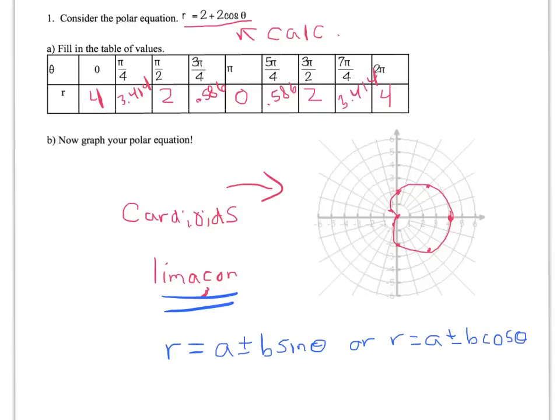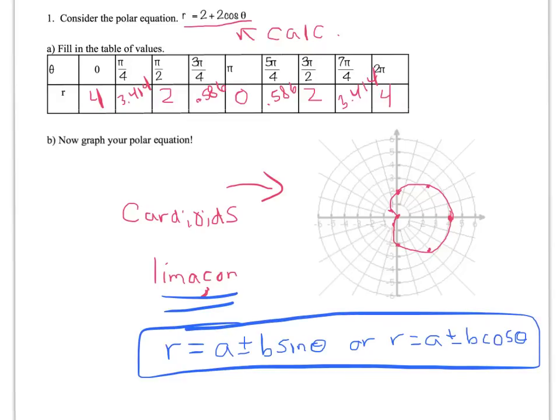Anything of that form tends to look like a cardioid or a lima-son. I'm going to have to go Google that, or look it up, because textbooks can't talk to you, so I didn't know how to pronounce it. Anyway, this is just our first example of another type of graph, as opposed to our roses.